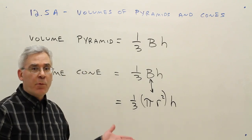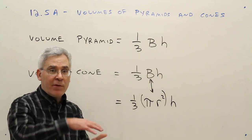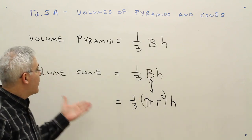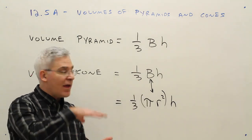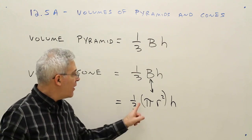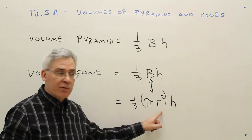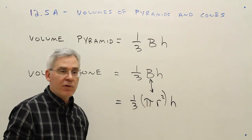To summarize what we just learned, the volume of a pyramid is one-third the area of the base times the height of the pyramid. The volume of a cone is also one-third the area of the base times the height. For a cone, the area of the base will always be a circle, and the area of a circle is pi r squared.